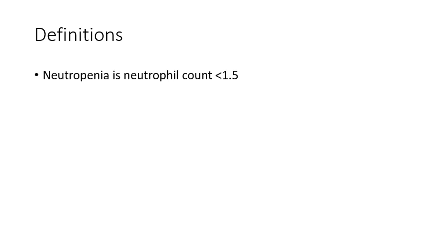Let's start with some definitions. Neutropenia is a neutrophil count of less than 1.5. When that count drops below 0.5 it's considered very high risk. Between 1 and 1.5 you may treat similarly to if they weren't neutropenic. 0.5 to 1 is an intermediate risk category, so you need to go very much on clinical judgement. But less than 0.5, anyone displaying any suggestion of sepsis requires admission and intravenous antibiotics.